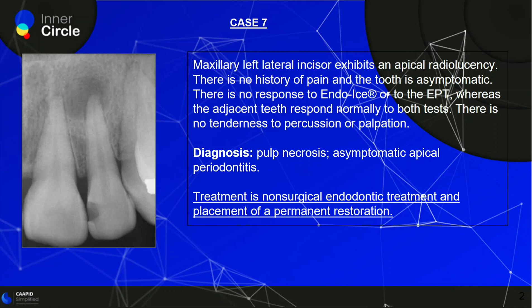In case seven, a maxillary left lateral incisor exhibits an apical radiolucency. There is no history of pain and the tooth is asymptomatic. There is no response to endo-ice or EPT, indicating pulp necrosis, whereas adjacent teeth respond normally. There is no tenderness to percussion or palpation. So the diagnosis is pulp necrosis with asymptomatic apical periodontitis. As a general rule, anytime there is irreversible pulpitis, apical periodontitis, or an abscess, the treatment is always non-surgical endodontic treatment and placement of a permanent restoration.